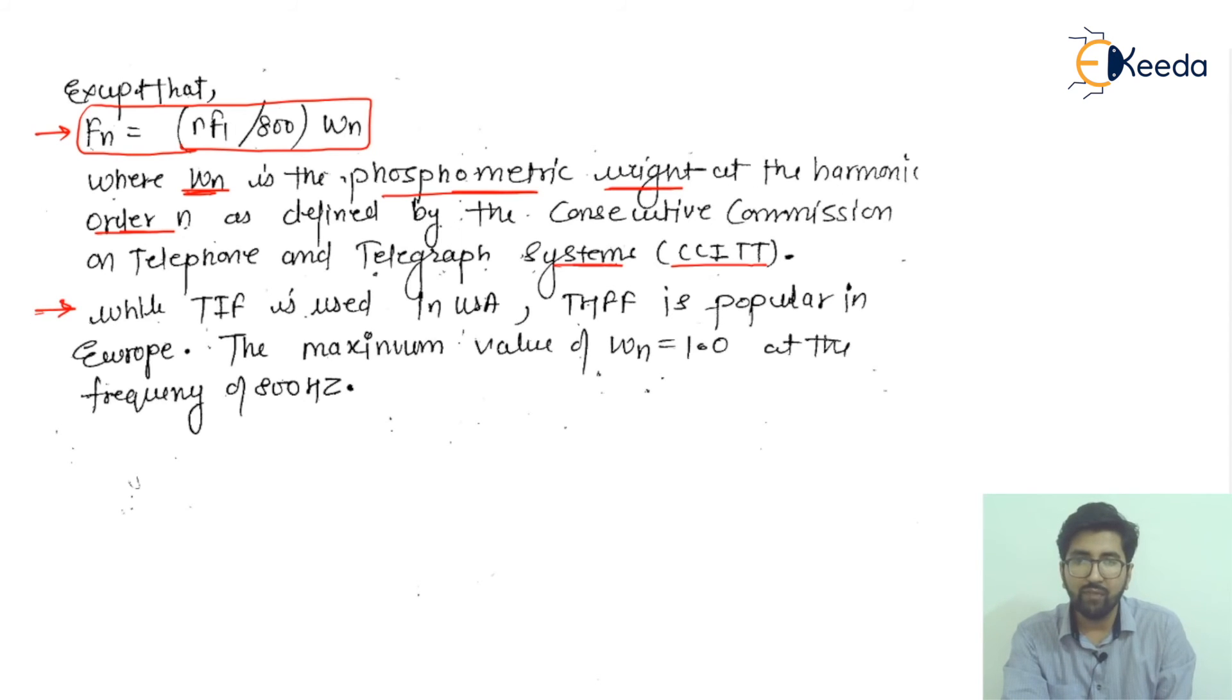TIF is used in the USA, while THFF is popular in Europe. These are standards related to frequency and harmonics. The maximum value of ωn is 100 at the harmonic order n and at the frequency of 800 Hertz.